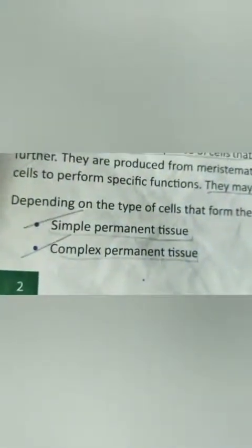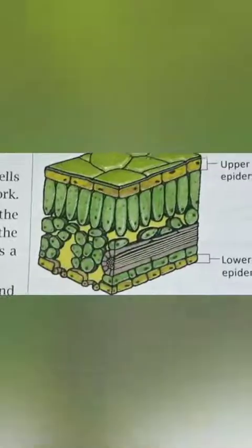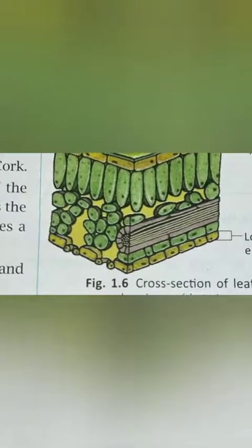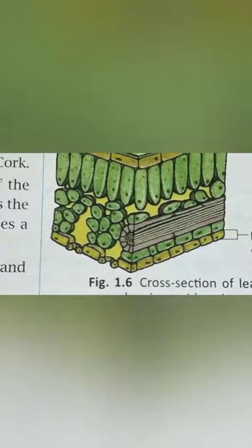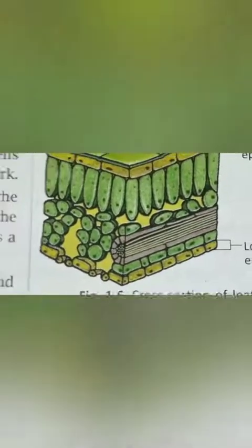Based on the type of cells, they are of two types: simple permanent tissue and complex permanent tissue. Based on their function they include protective tissue. Here you can see a cross section of a leaf showing the epidermis, which is a protective tissue.